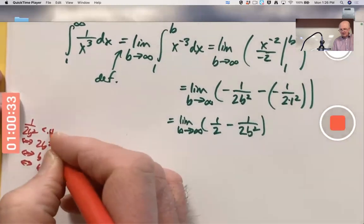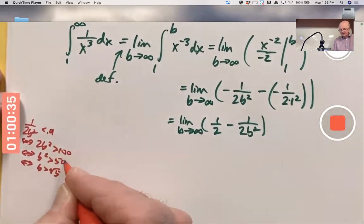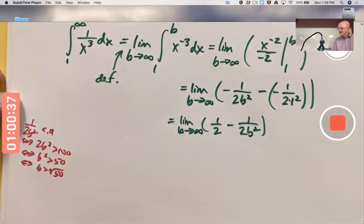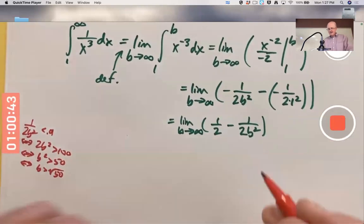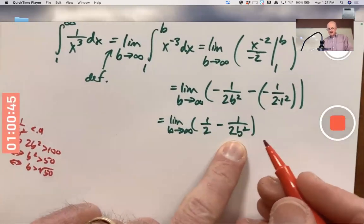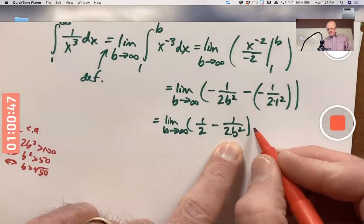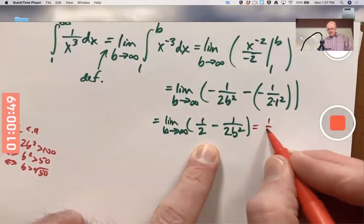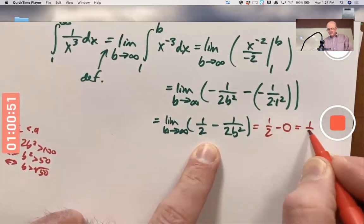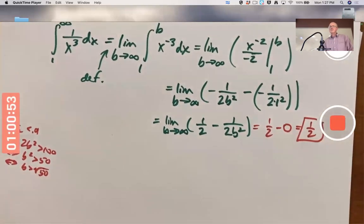If I made this be a 0.01, then this would be 100, this would be a 50, this would be square root of 50. Et cetera. I could consider lots of examples like that. I can make this as small as I like by making b big enough. So the limit here is 1.5 minus 0, which is 1.5. This limit does exist.